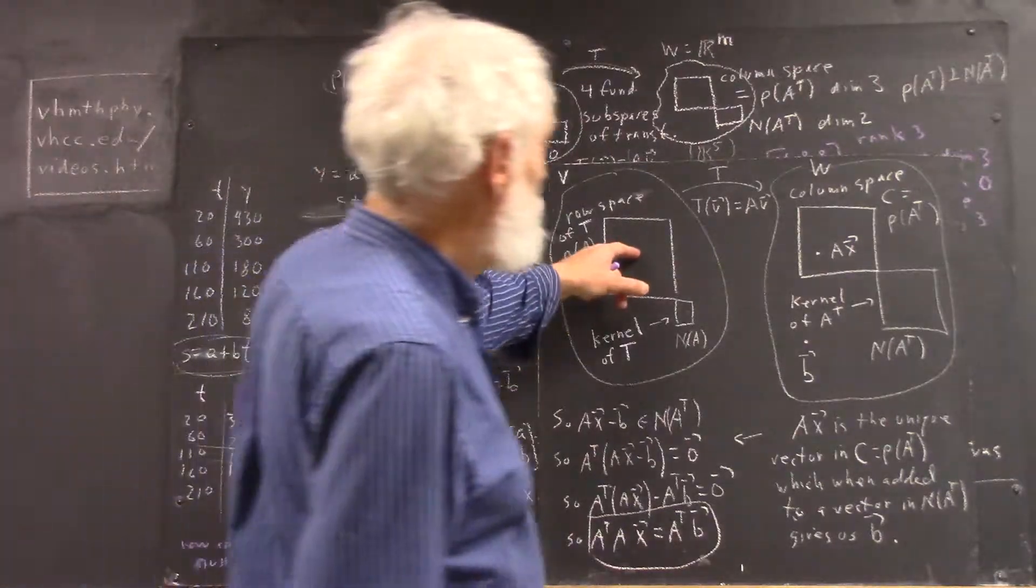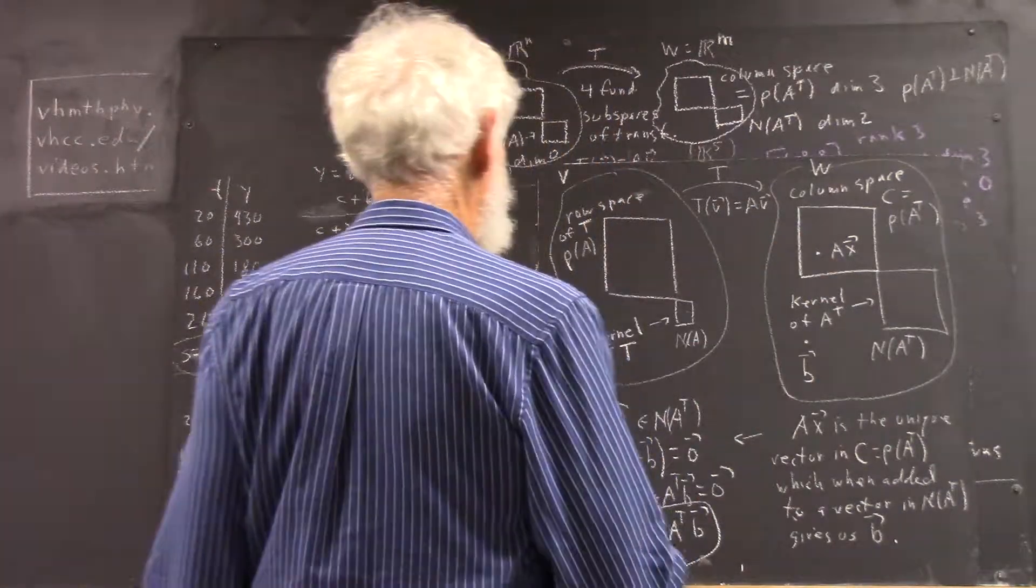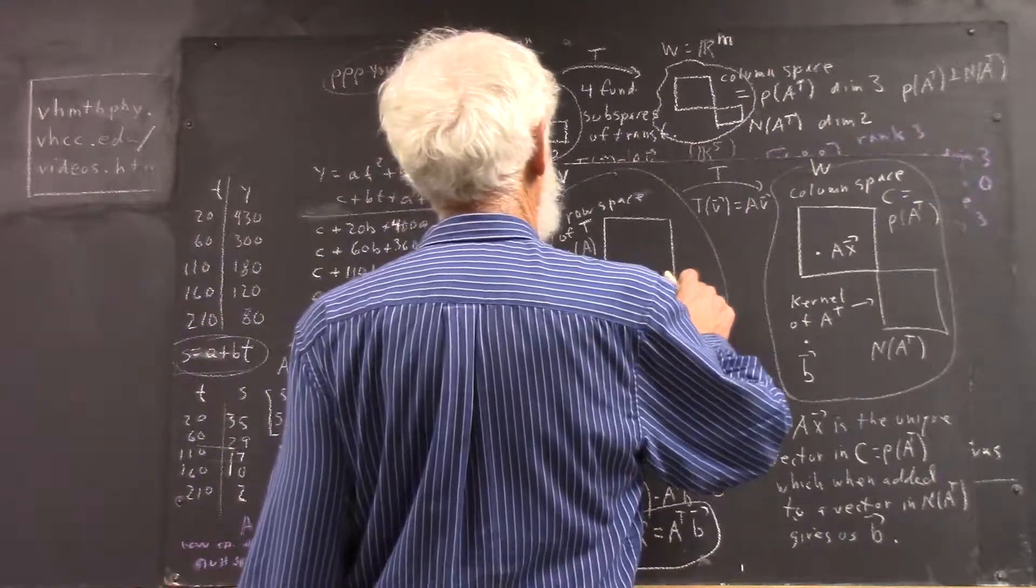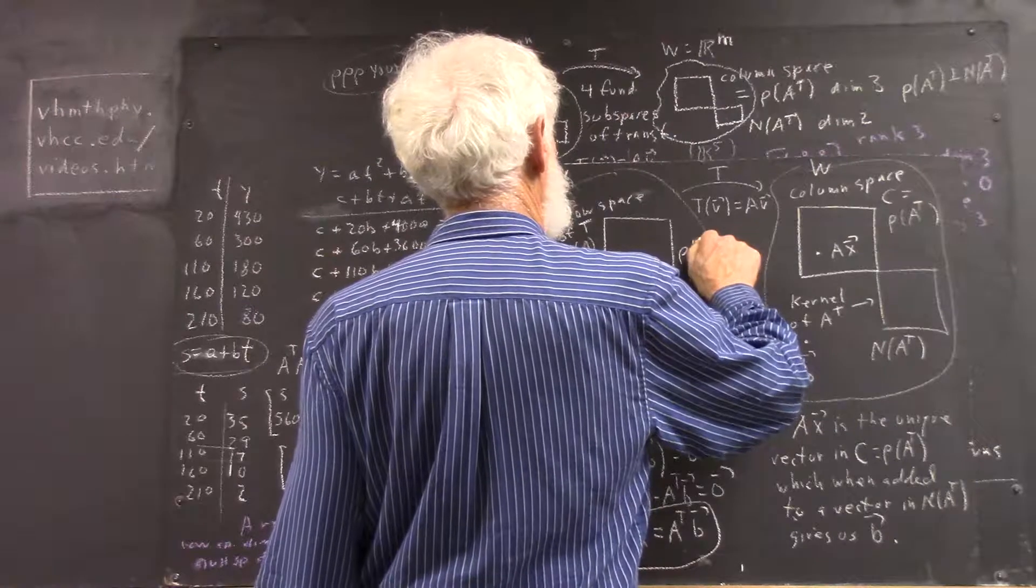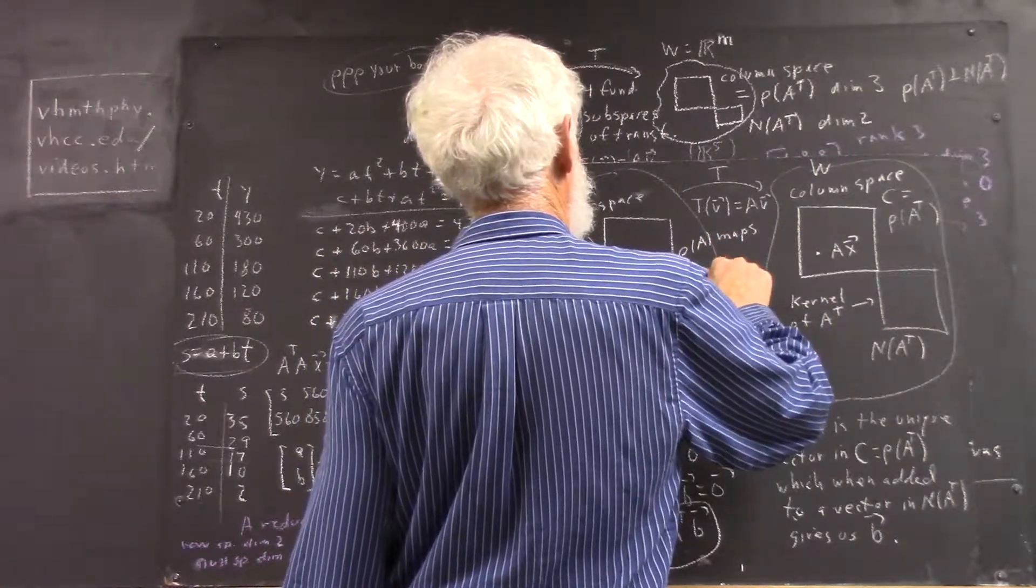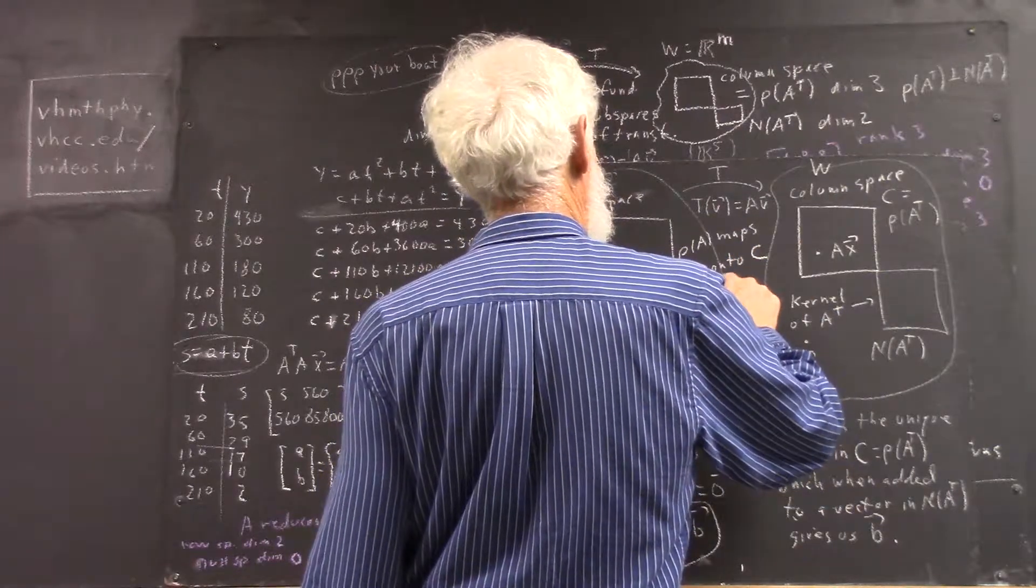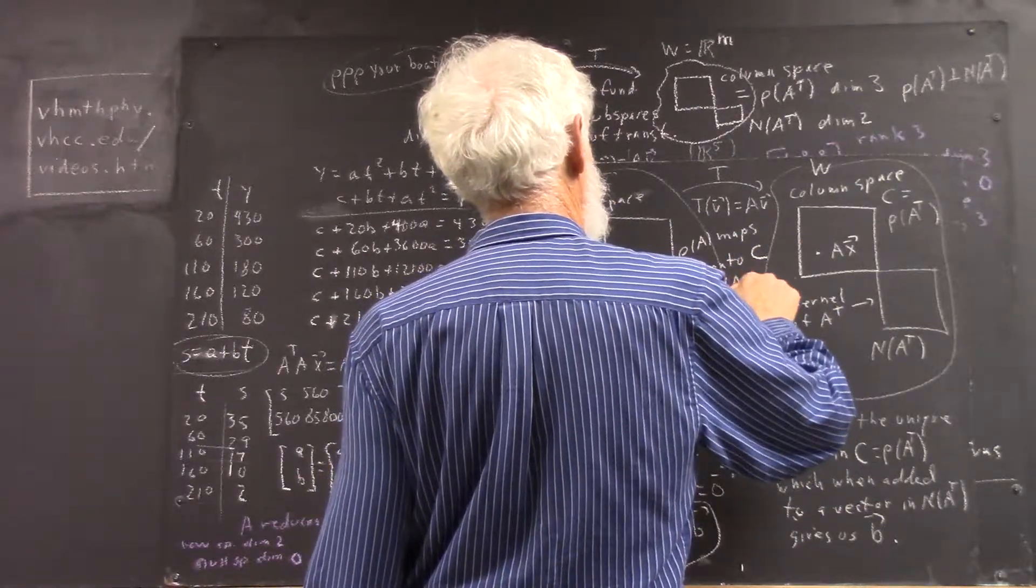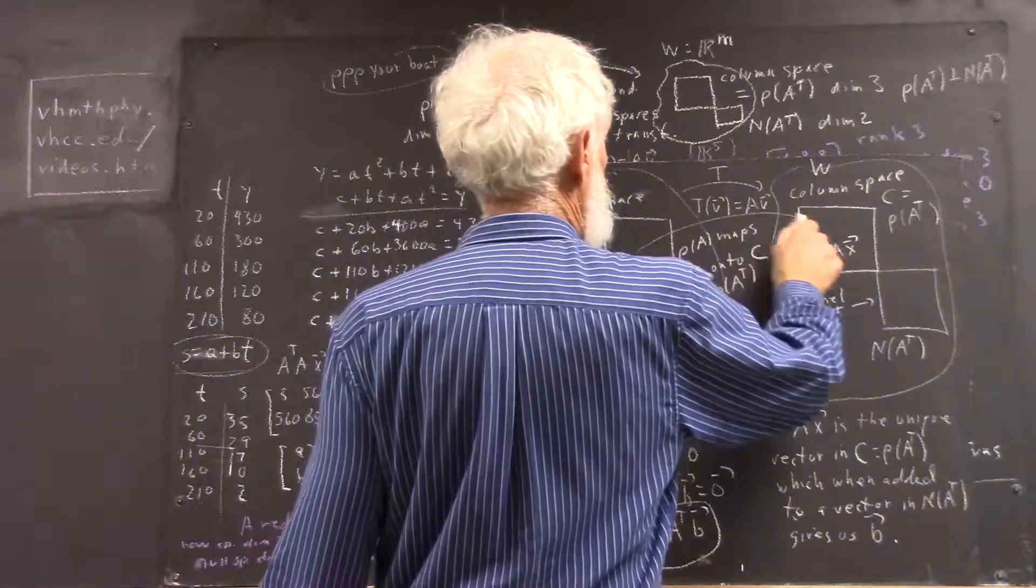This row space maps one to one onto this column space. Or the row space of A transpose. This map is one to one.